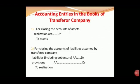Accounting entries in the books of the Transferor Company. For closing the accounts of assets — the asset accounts are closed. In the books of Transferor Company A and Transferor Company B, we pass entries for assets. The asset entry goes to the Realization Account. The Realization Account lists the assets and liabilities of the Transferor Company.